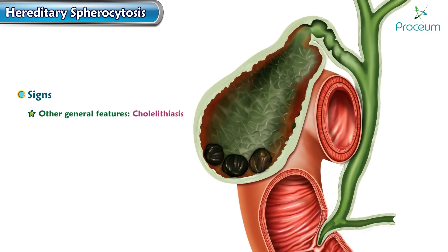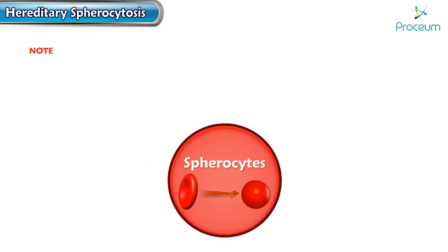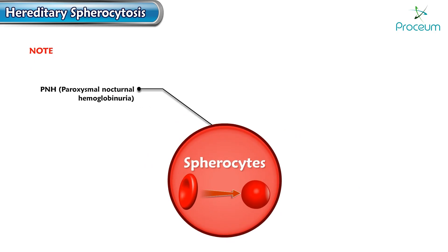Other general features of hemolytic anemia, like cholelithiasis, are seen in about 40 to 50 percent of patients with hereditary spherocytosis. Note that spherocytes are also seen in paroxysmal nocturnal hemoglobinuria.